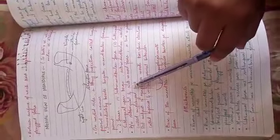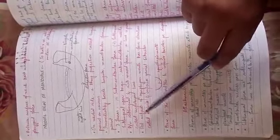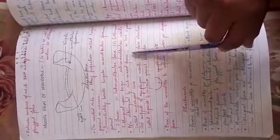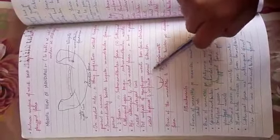The submandibular and sublingual fossae will be below the mylohyoid line. The posterior surface of symphysis menti has four elevations called superior and inferior genial tubercles.